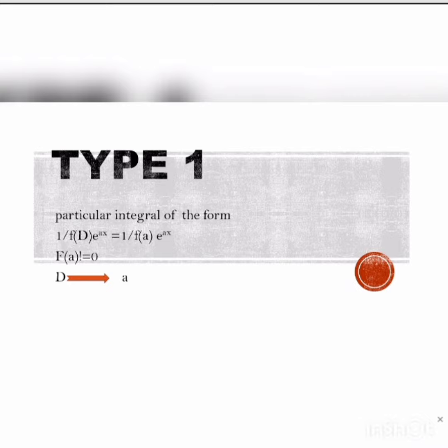Now, let us see one of its types where the particular integral will be in the form 1/f(D) e^(ax) = 1/f(a) e^(ax), where f(a) is not equal to 0. Then we need to substitute D as the value of a.